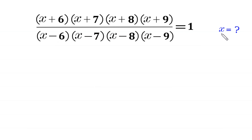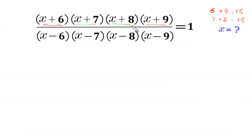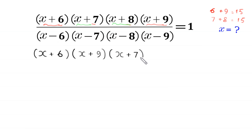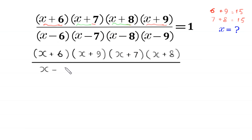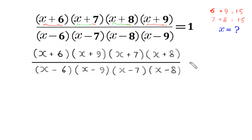Let's start. Notice that 6 plus 9 equals 15 and 7 plus 8 also equals 15. So we pair (x+6) with (x+9) and (x+7) with (x+8), rewriting the equation as (x+6)(x+9) times (x+7)(x+8) divided by (x-6)(x-9) times (x-7)(x-8) equals 1.